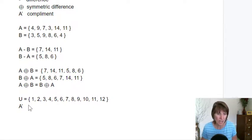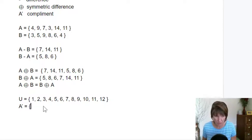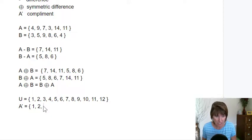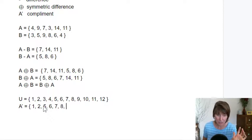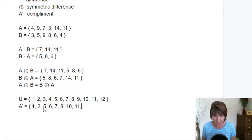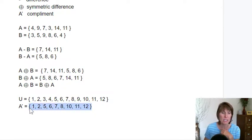The complement of A is everything in the universe except what's in A. So going through the universe: 1 is not in A, 2 is not in A. 3 is in A, so we don't count it. 4 is in A, so we don't count it. Then there's 5, 6, 7, 8. 9 is in A, so we don't count it. And then 10, 11, and 12. So the complement of A is everything in the universe except what's in A. That gives us 3 more set operations: the difference, the symmetric difference, and the complement.